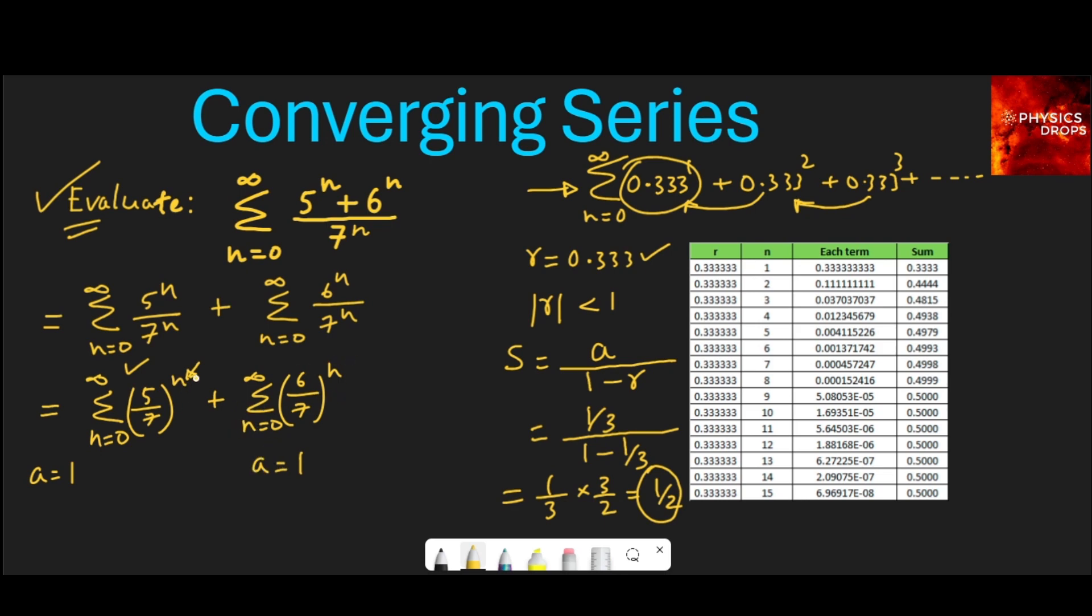When we substitute 2 for the value of n here, we get a different value. But then we can also see that the ratio will be 5 upon 7, because the second term will be 5 upon 7 to the power 2. That when divided by 5 upon 7 will give you 5 upon 7. Similarly, the ratio here is 6 upon 7.